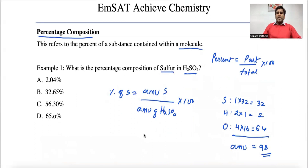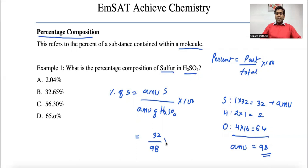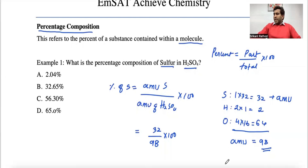In this total of 98, what is the percentage composition of sulfur? Substituting into the formula: atomic mass unit of sulfur is 32, divided by atomic mass unit of H₂SO₄ which is 98, multiplied by 100. Putting it in the calculator: 32 divided by 98 times 100 gives 32.65 percent.